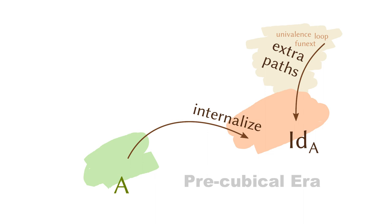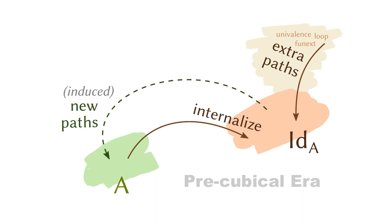We were adding these extra paths into the identification types, and we hoped that by doing so it would induce a new path in the type we are trying to discuss. For example, when you are adding a loop in the ID of S1, then implicitly it's adding a loop into the circle. But there's a tension in this picture.